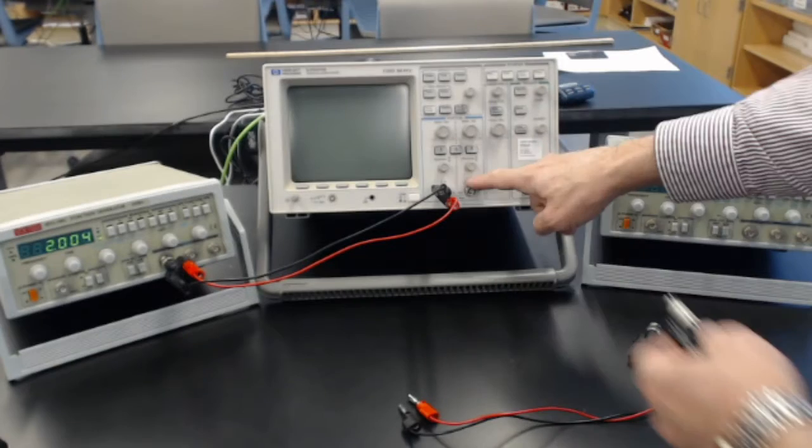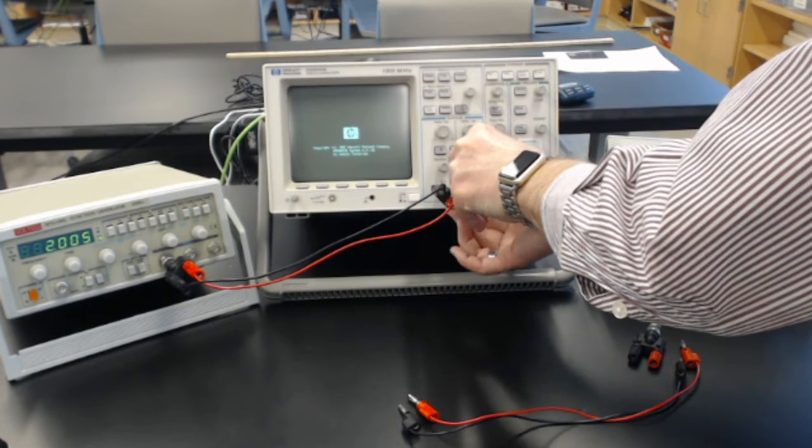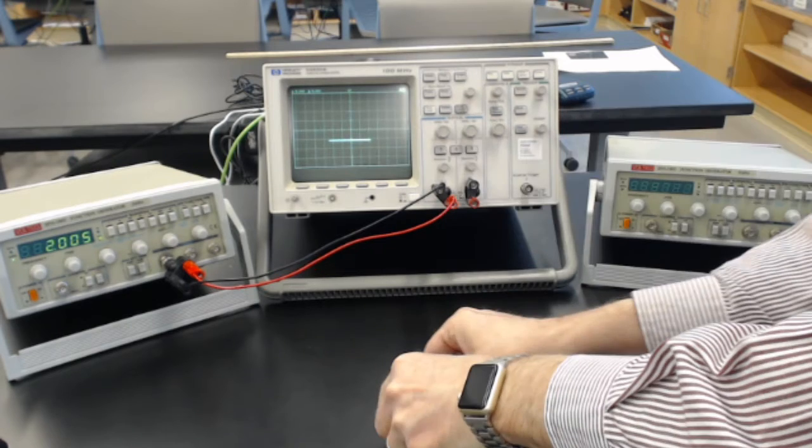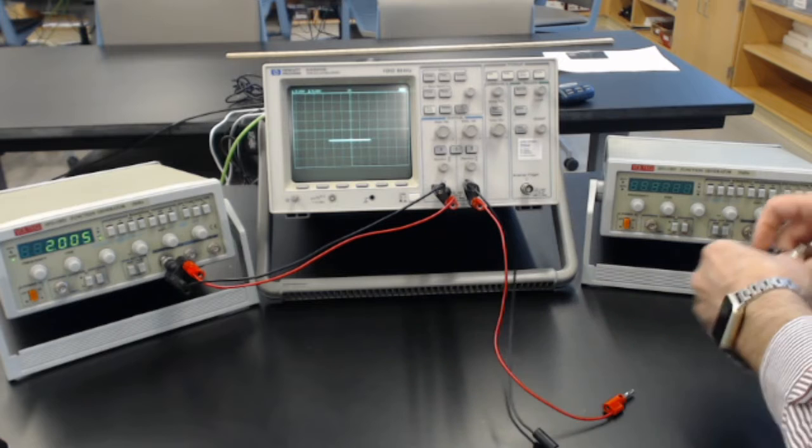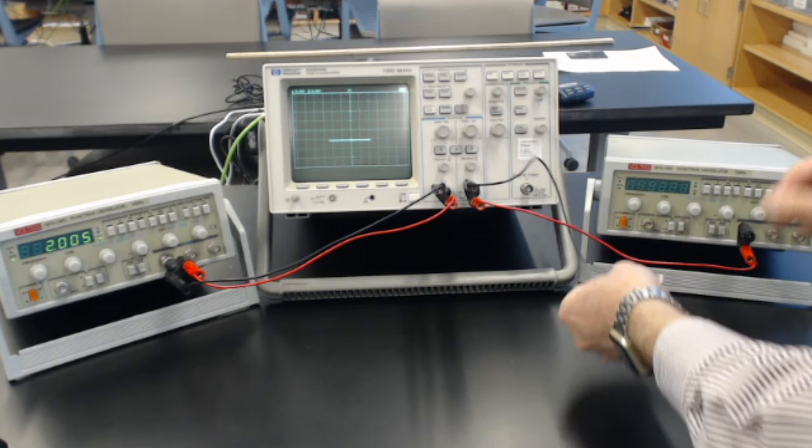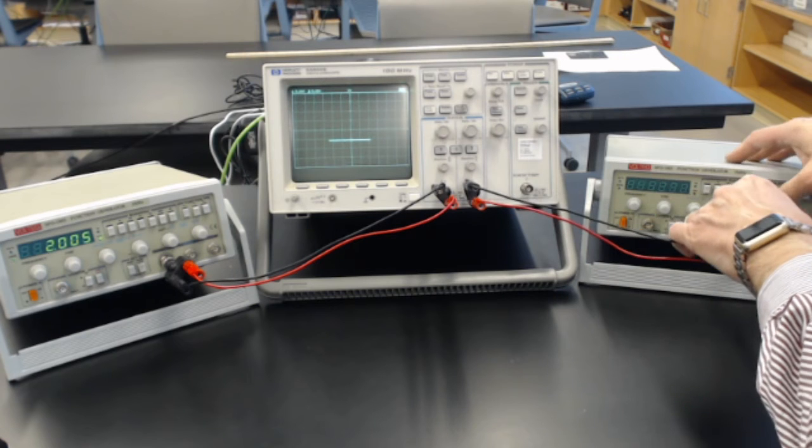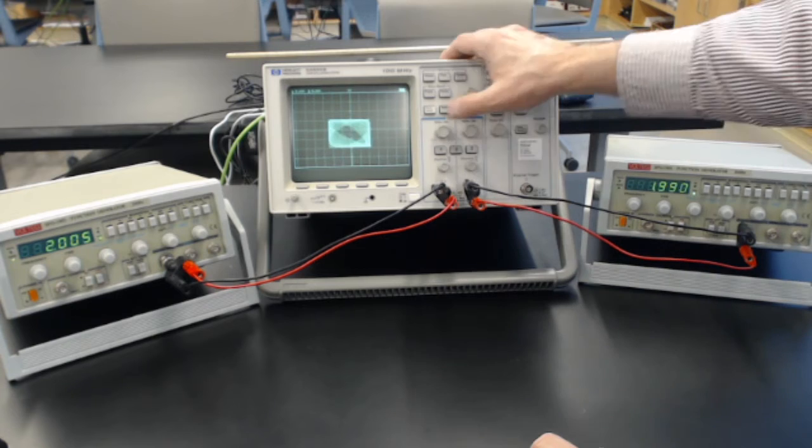But then I've got a second channel on the oscilloscope, so I'll put a second adapter here. And then I'll have the output from the other function generator coming in here. And I can turn this on, too.